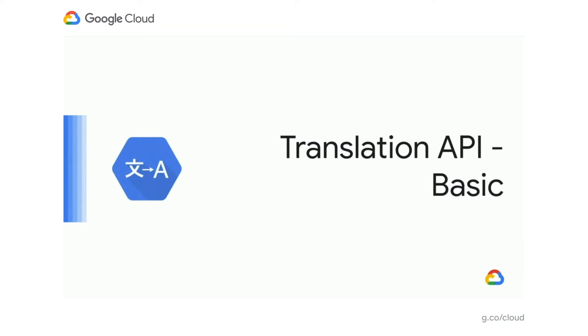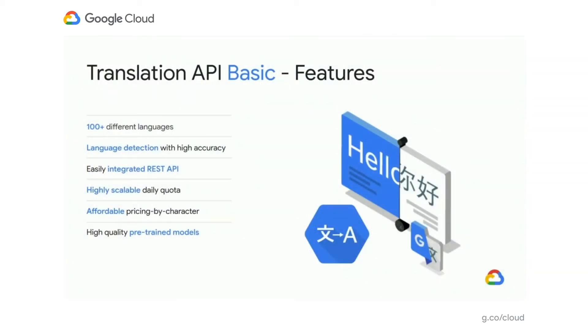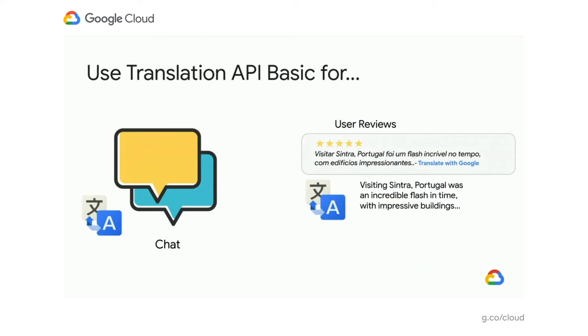Our products include Translation API Basic, Translation API Advanced, AutoML Translation, and a new one coming later. Translation API Basic is intended for simple use cases and user-generated content where you're not trying to control specific translations. It supports language detection and continues to use advancements of new machine learning models as they're released. You can use Translation API Basic for chat scenarios and user-generated content because it's easy to integrate with across many languages at a simple platform.